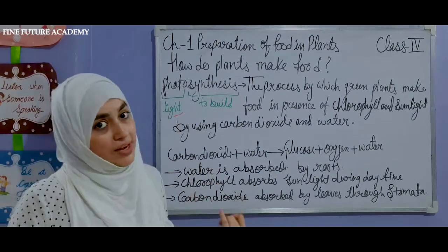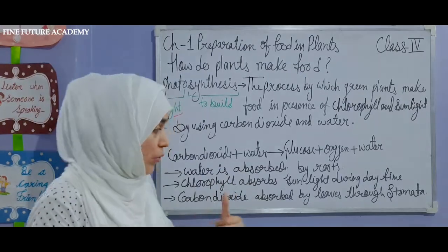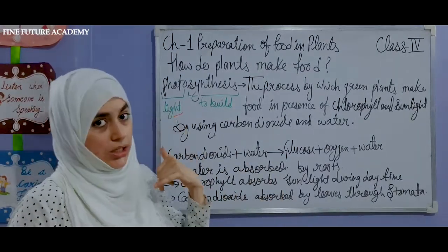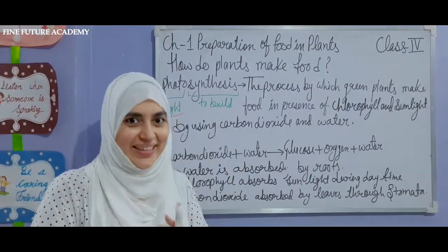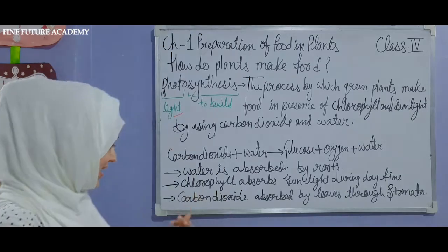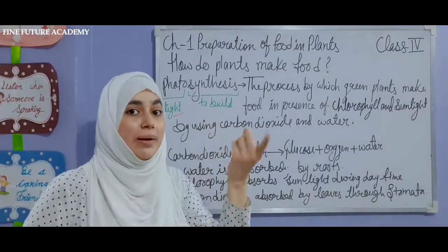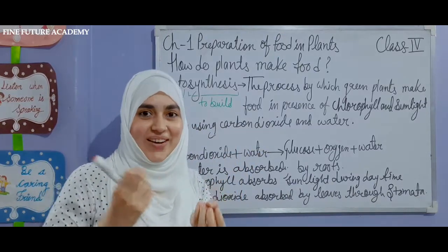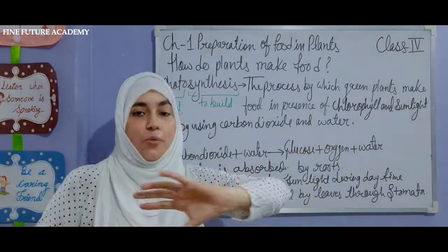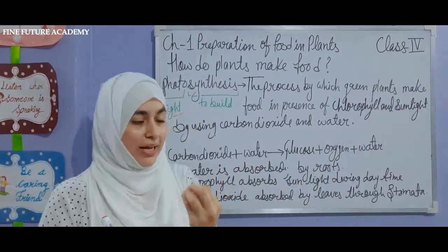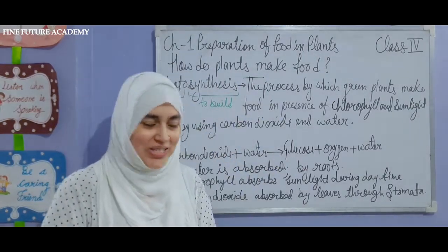Chlorophyll absorbs sunlight during the daytime. Next, carbon dioxide is absorbed by the leaves through stomata. When you observe the leaves, you can see tiny holes on their surface — those are known as stomata. Stomata absorb the carbon dioxide that we exhale.